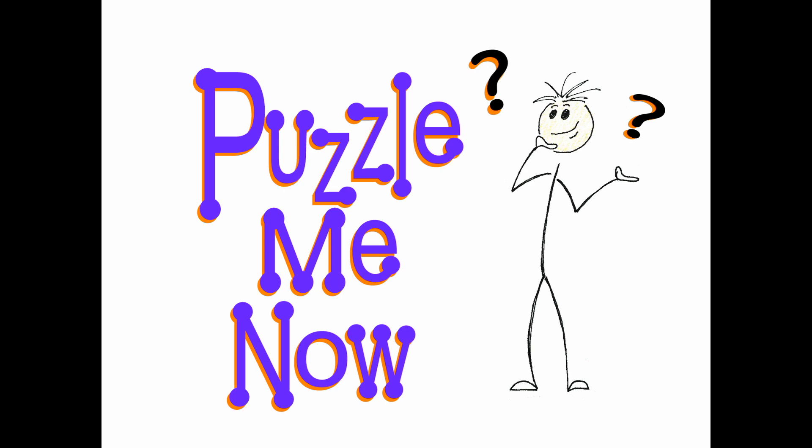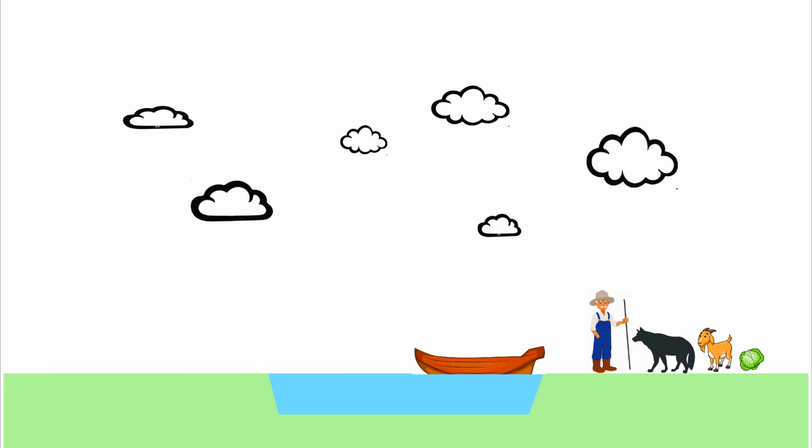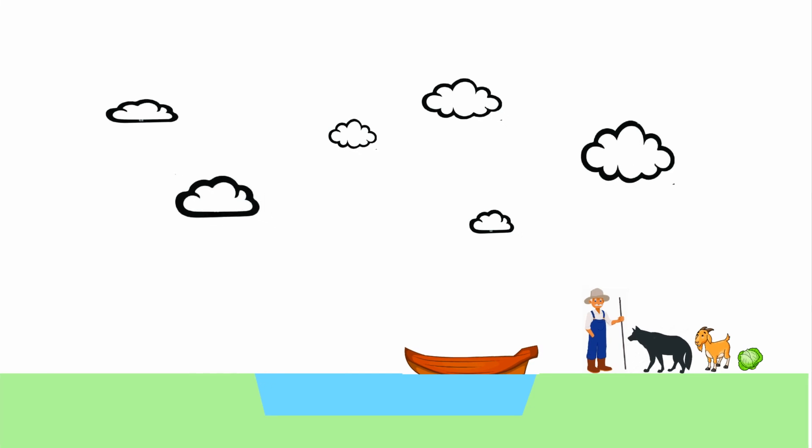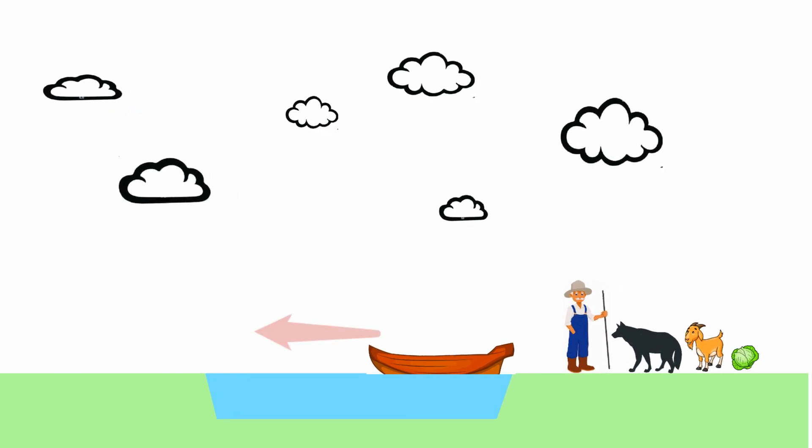Welcome to Puzzle Me Now. Here's a classic puzzle of a farmer, a wolf, a goat, and a cabbage having to get across a river.